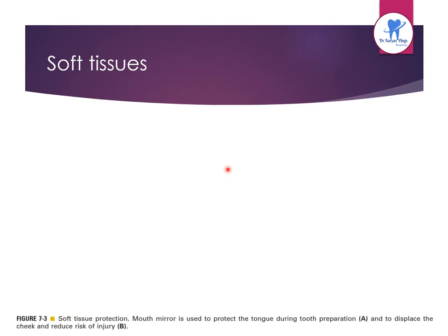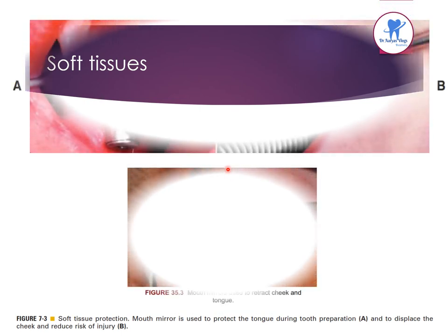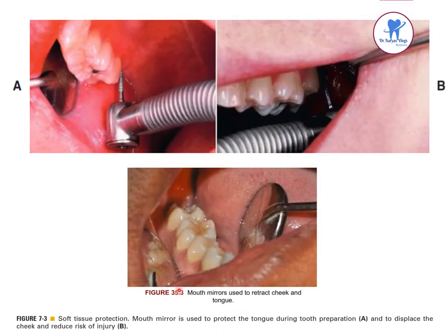For soft tissue protection, a mouth mirror is used to protect the tongue during tooth preparation. It is also used to retract or displace the cheek, reducing the risk of injury.